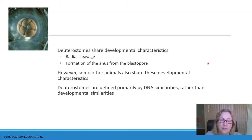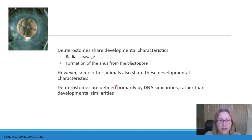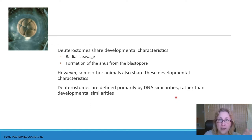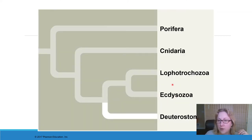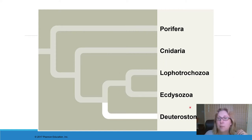Deuterostomes have very similar early development, even though a few other animals also share that. The deuterostomes we'll discuss — echinoderms, chordates, and hemichordates — DNA has shown that they form a monophyletic clade. But if we include deuterostomic animals found in the ecdysozoa, it would no longer be a clade, so we don't include those. That's why we don't label that broader group 'protostomia,' because they're not all protostomes.